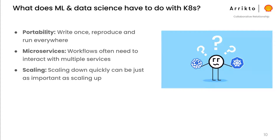First is portability — you write once and run everywhere. Second, machine learning typically uses a lot of services, which is a perfect fit for microservices — Kubernetes and microservices are a match made in heaven. Workflows often interact with multiple services. Third is scaling: scaling down quickly can be just as important as scaling up. Machine learning loves GPUs, which are expensive, so Kubernetes is perfect infrastructure for ramping up and down quickly.